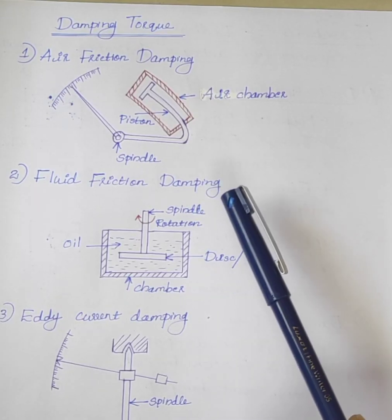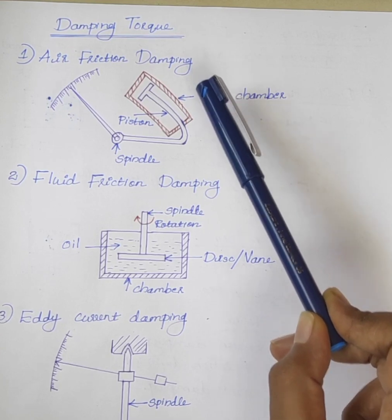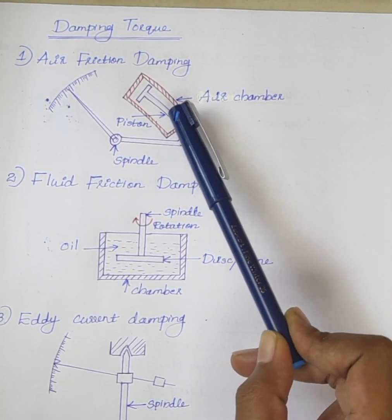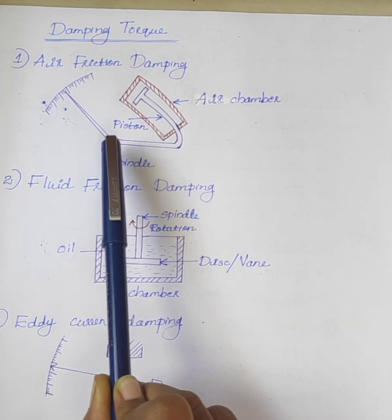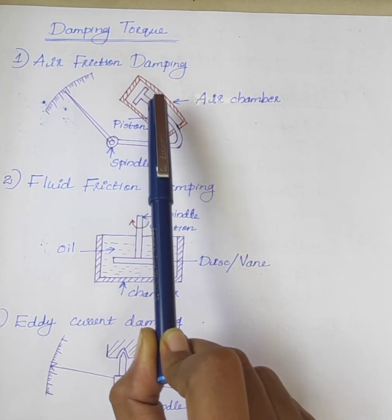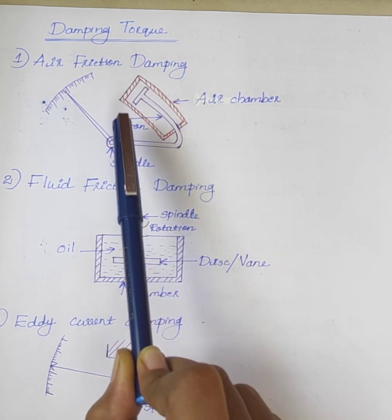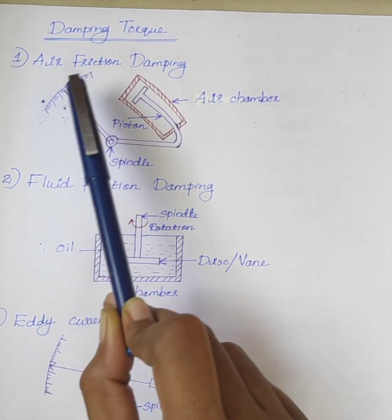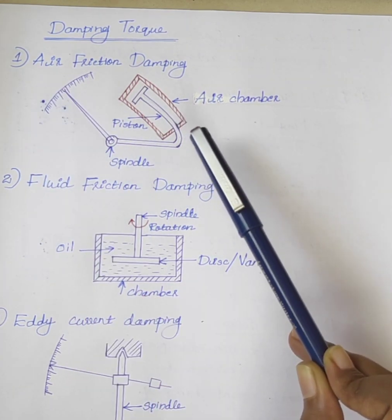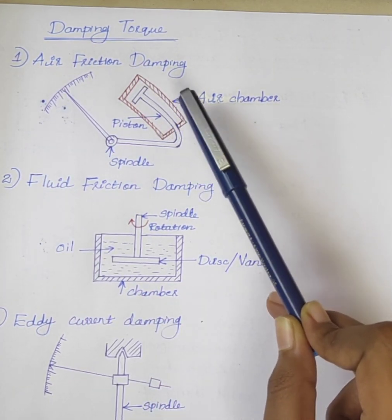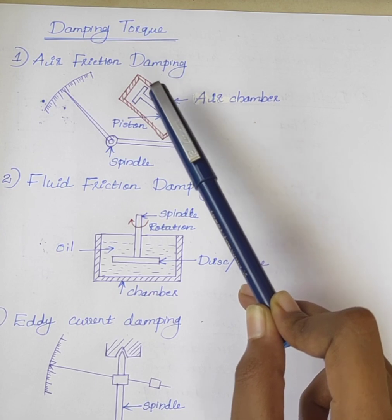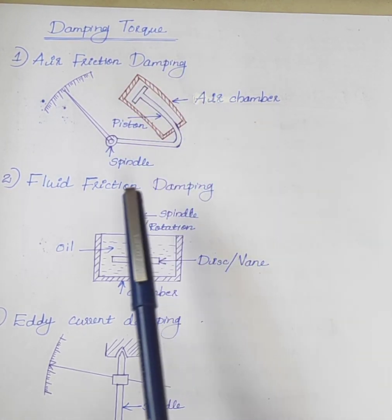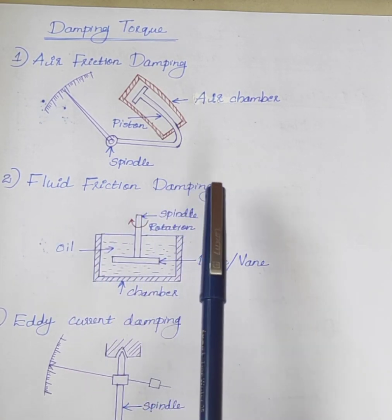Damping force is produced by air friction, fluid friction, and eddy current. The first type is air friction damping. This consists of a light aluminum piston which is attached to the moving system. When oscillations occur, the piston moves into and out of the air chamber. The developed pressure damps out the oscillations.